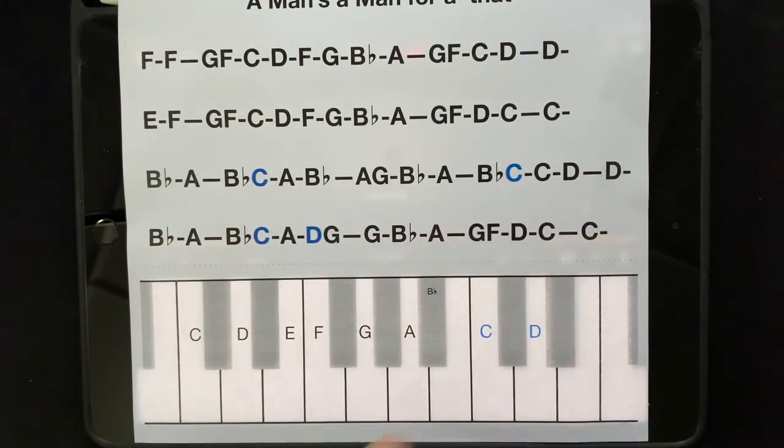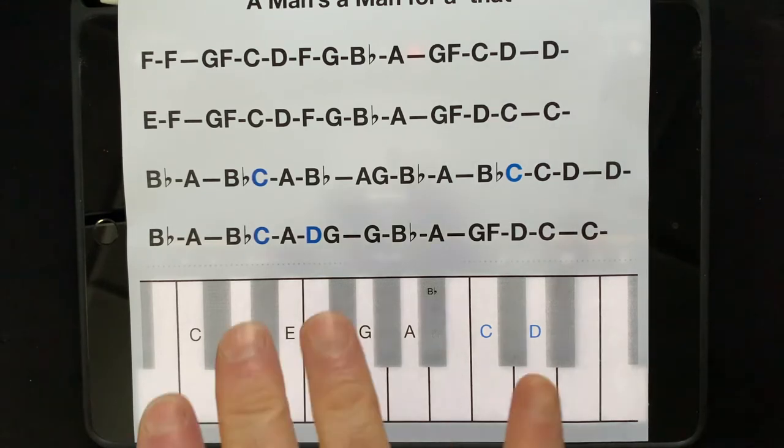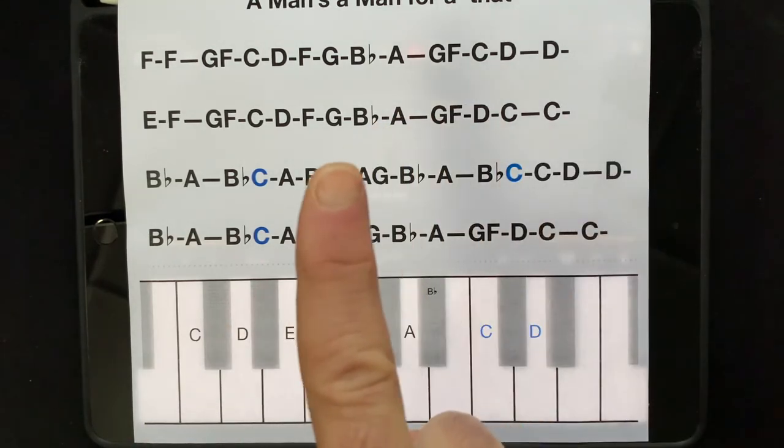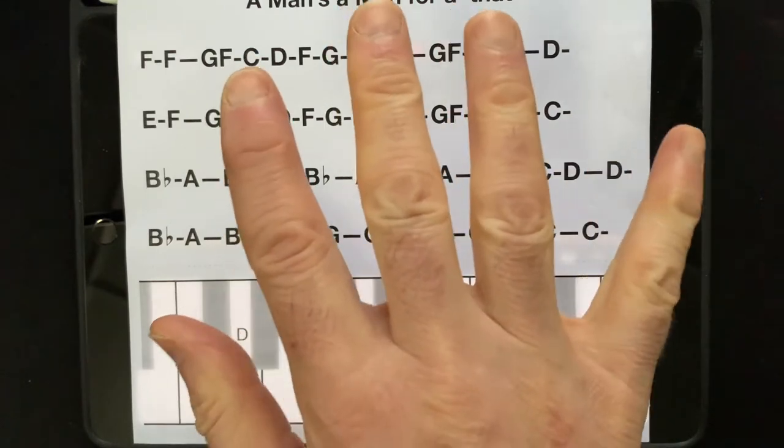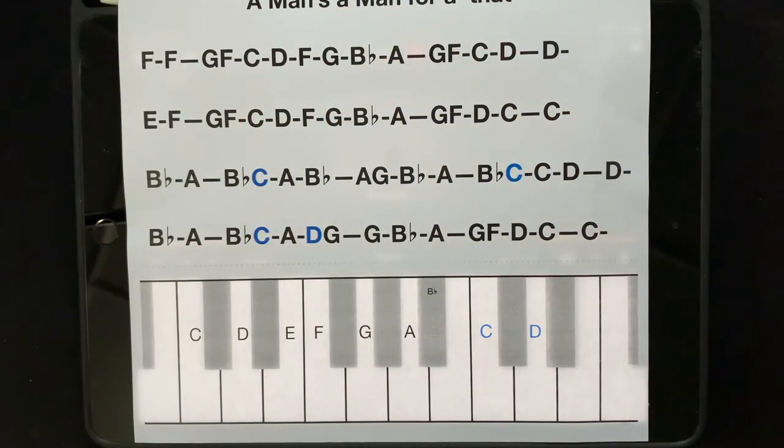And there's still a couple of blue ones, but mostly it's black now. The other thing you might notice when I play this is that I don't just use one finger - I'll be using probably all five fingers to play this tune. So here we go, A Man's a Man for All That.